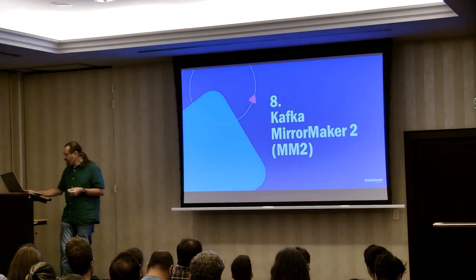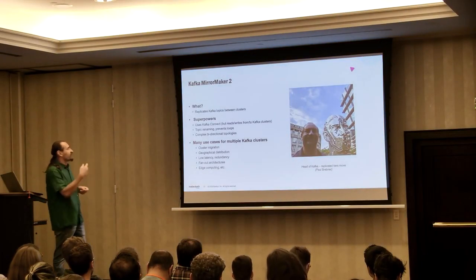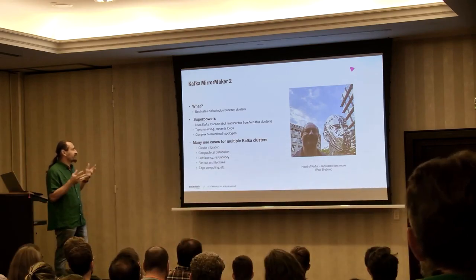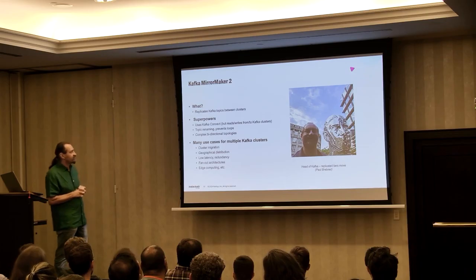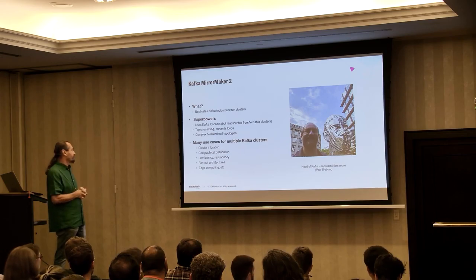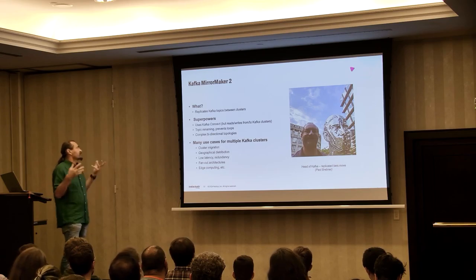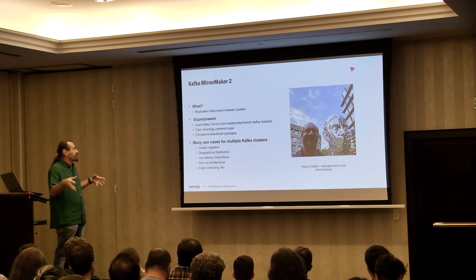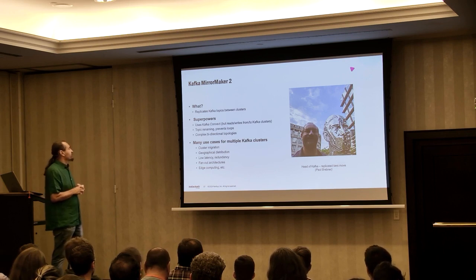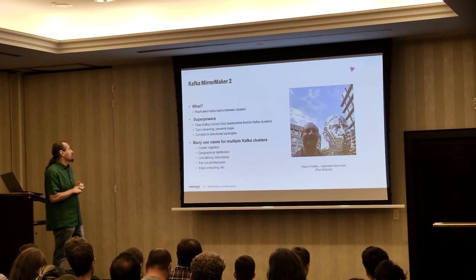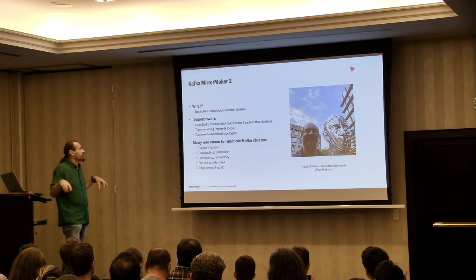Number eight: Kafka Mirror Maker 2. I came by Prague here — yesterday was actually the 100th centenary of Kafka's death, which I didn't know. Mirror Maker 2 replicates Kafka topics between different clusters. It uses Kafka Connect but reads and writes from and to different Kafka clusters. It supports topic renaming, prevents loops — which are a problem in distributed event systems — and allows complex bidirectional topologies.